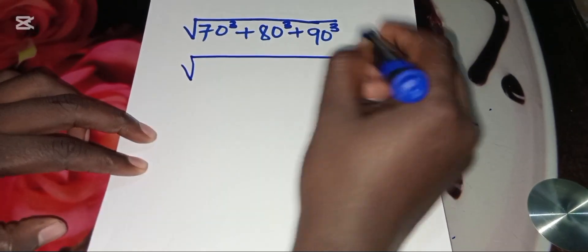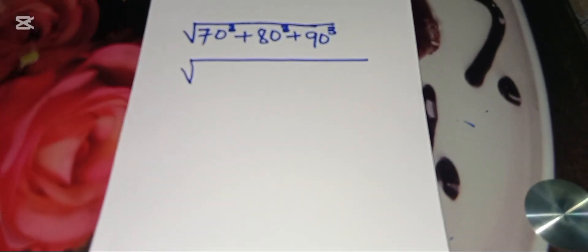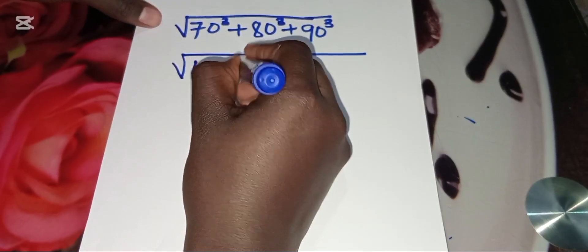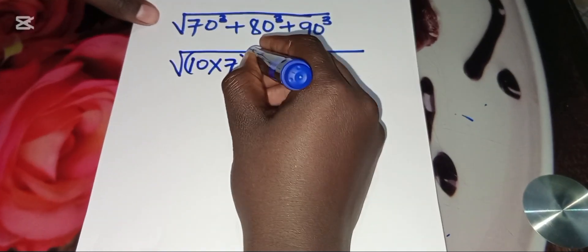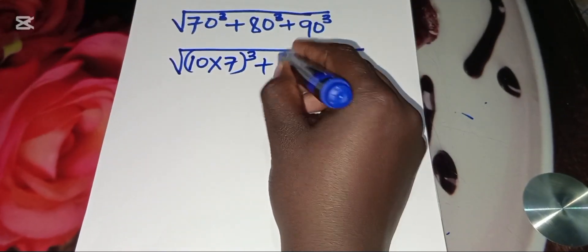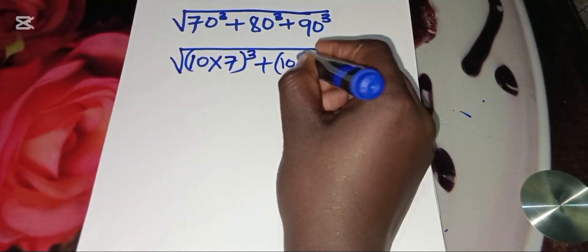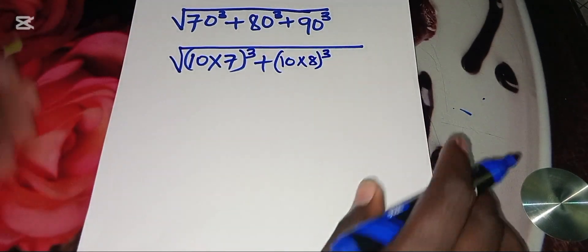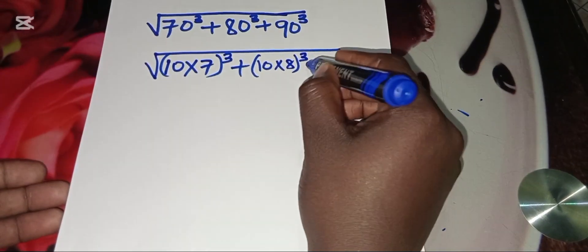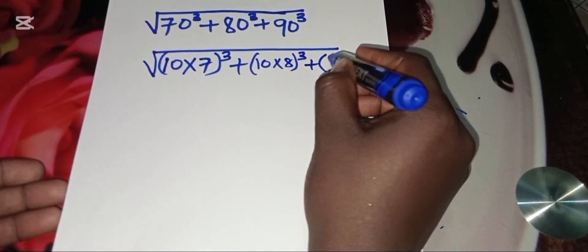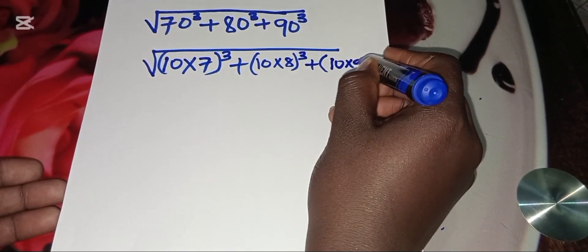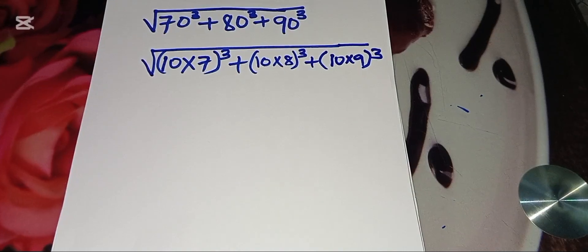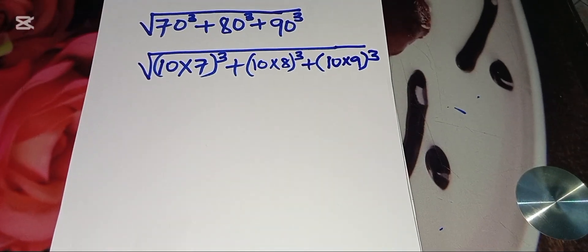We can express 7 cubed as 10 times 7 raised to power 3, plus 10 times 8 raised to power 3, and also plus 10 times 9 raised to power 3.